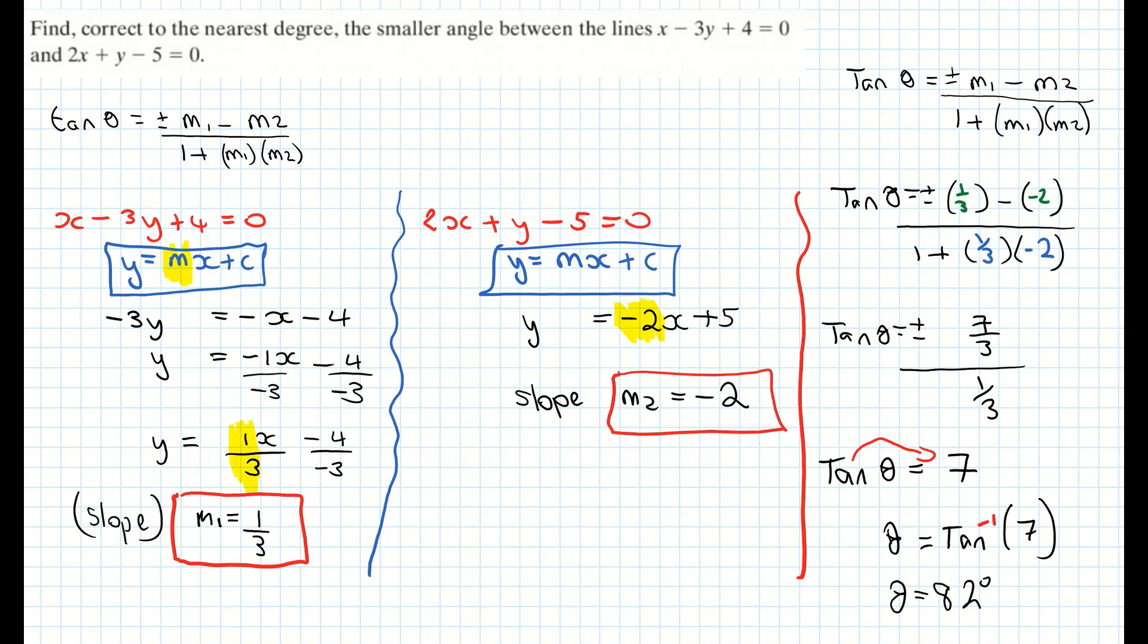Now the question did say give my answer to the smallest angle. If the question asked for the largest angle all I would have to do there is take away 82 from 180 degrees. So again just double check the question. Which angle are they asking you to find?